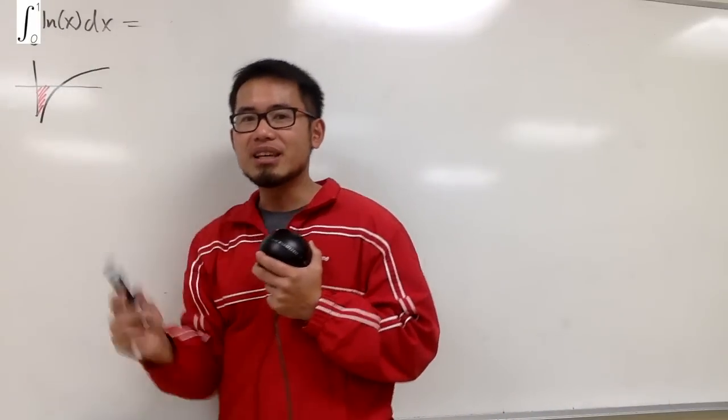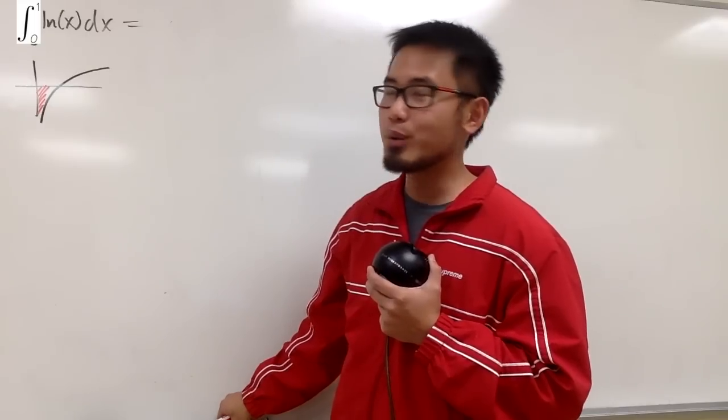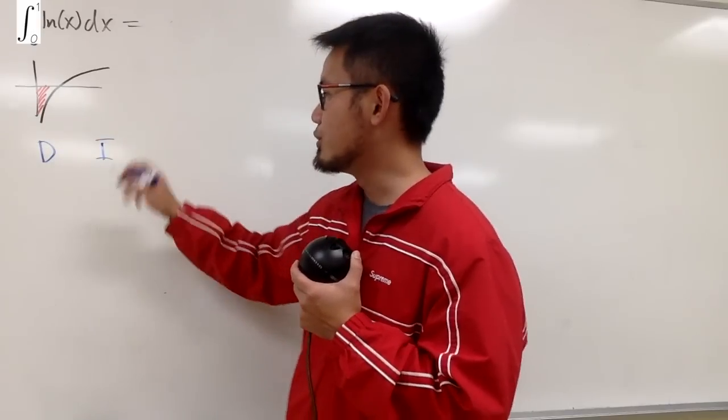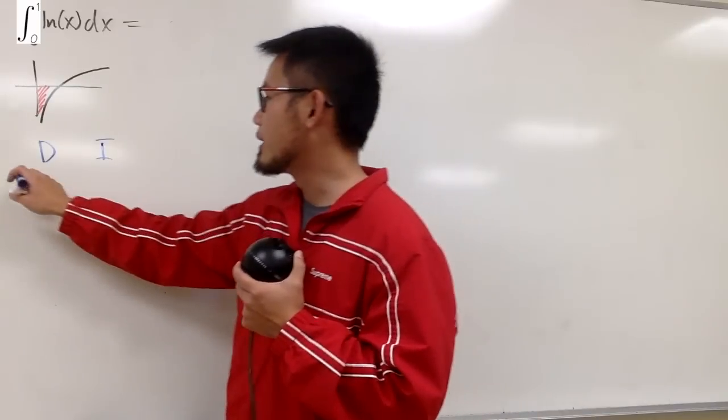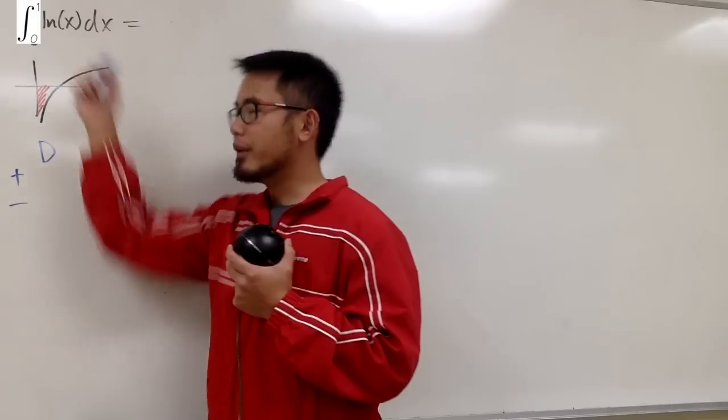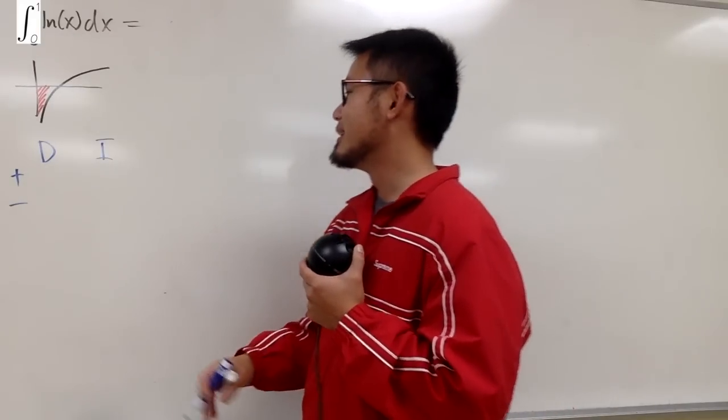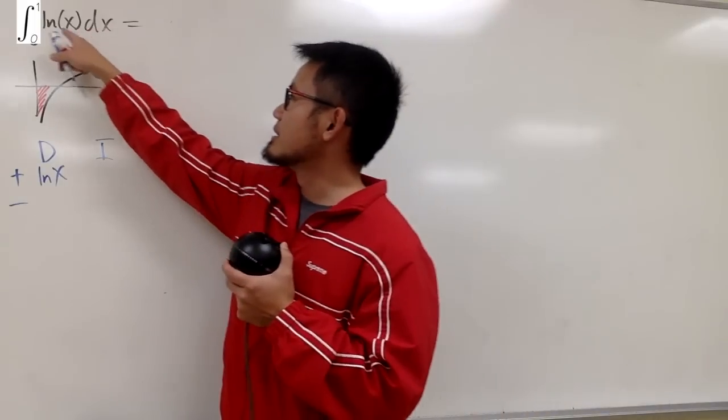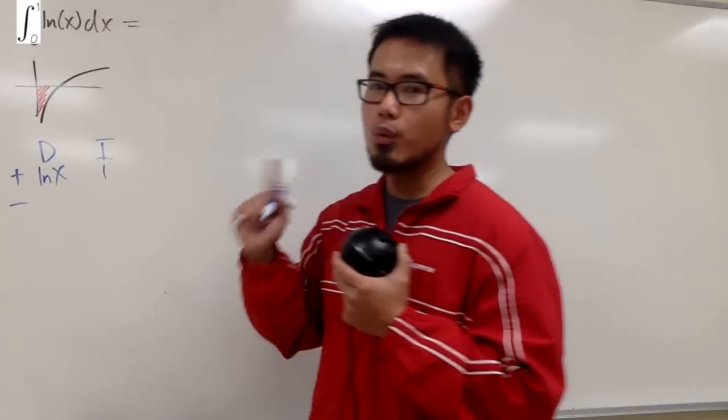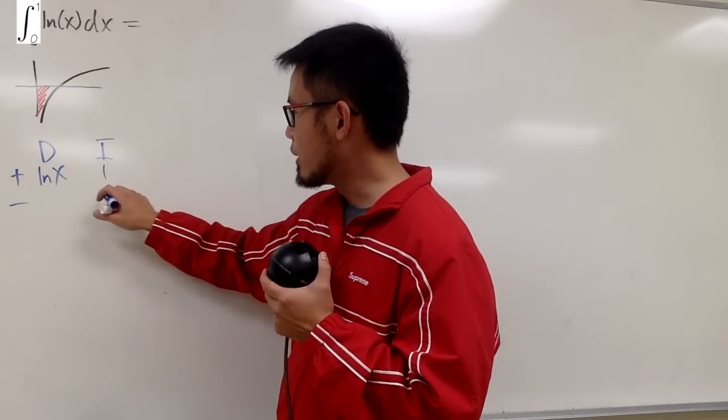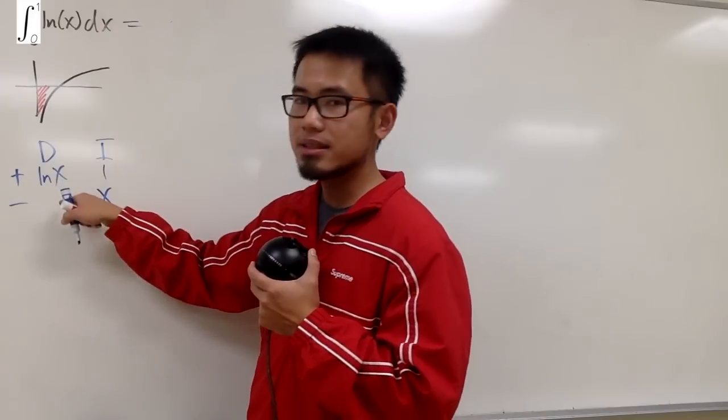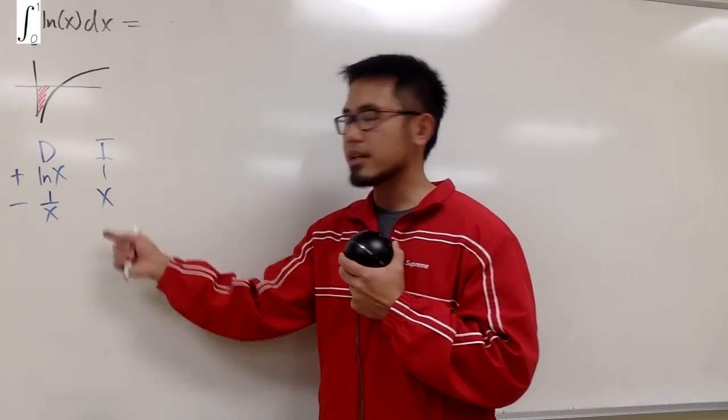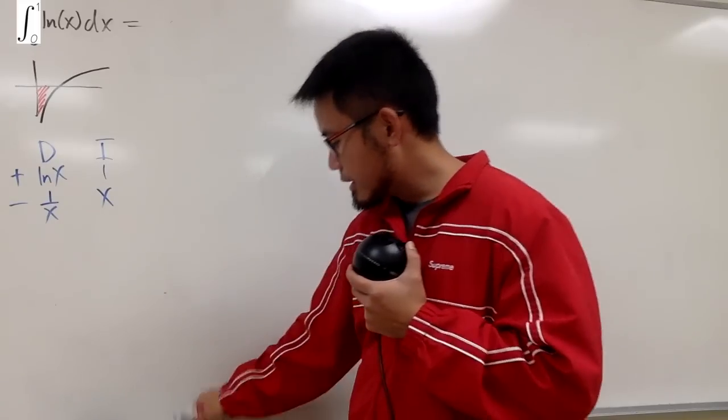We are going to integrate ln(x) first, and to do so we have to use integration by parts. I will use the DI setup. I have to pick something to differentiate and something else to integrate. Do I want to integrate ln(x)? No, because that's the original question. So let me differentiate ln(x). You can look at this as 1 times ln(x), so I can just integrate 1. Integrating 1 in the x world is just x. Differentiating ln(x) is just 1/x.